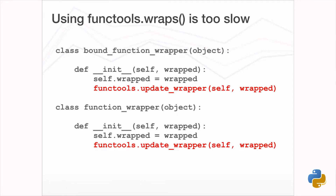If we're using a function closure or a straight class wrapper, this copying can be done at the point the decorator is applied. With the wrapper being a descriptor though, it technically also needs to be done in the bound wrapper. As the bound wrapper is created every time the wrapper is called for a function bound to a class, this is going to be too slow — we need a more performant way of handling this.